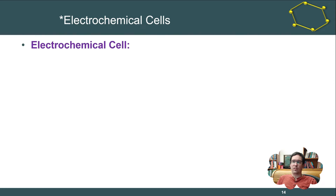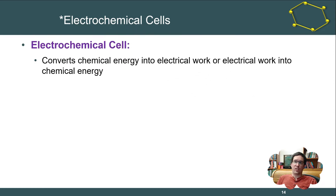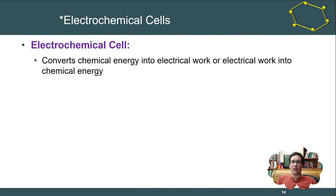An electrochemical cell is a system that converts chemical energy into electrical work, or electrical work into chemical energy. We're going to distinguish them based on whether they are out of equilibrium in a way that provides energy, or whether we need to provide an exterior voltage to drive them back the other direction.